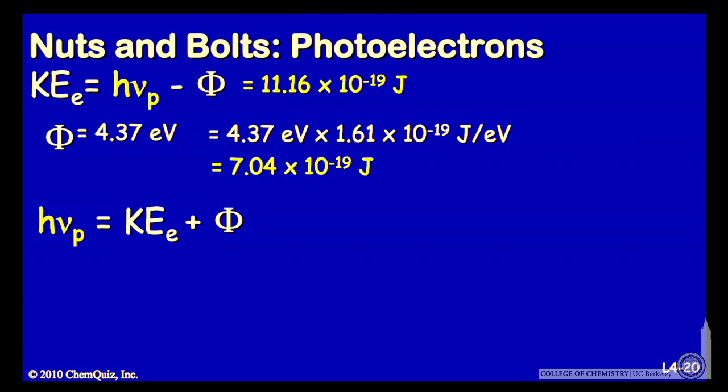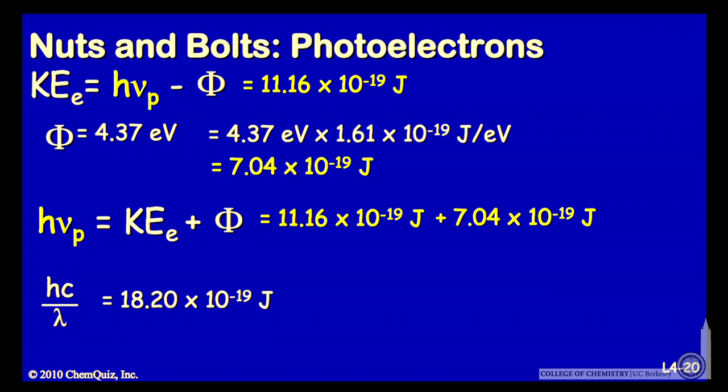So we'll rearrange now and solve for the energy of the photon. The energy of the photon is the kinetic energy of the electron plus the work function. That has to equal 11.16 times 10 to the minus 19 joules. And we're going to add on that work function, 7.04 times 10 to the minus 19 joules. We can express the photon energy in terms of its wavelength, as well as its frequency. And that has to equal the sum of these two, or 18.20 times 10 to the minus 19 joules.